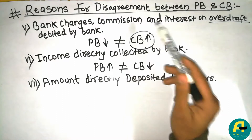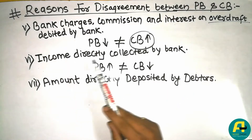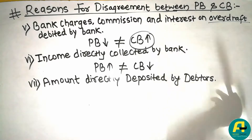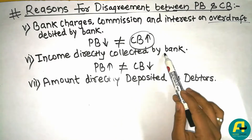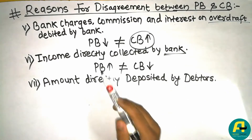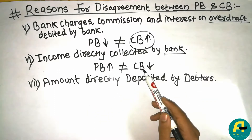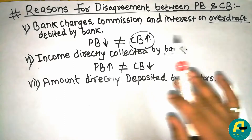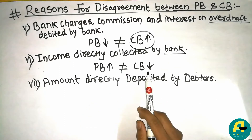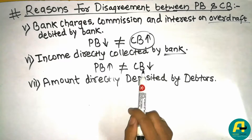Another reason is income directly collected by bank. For example, if you are working in an organization, your employer may deposit your income directly into your bank account. In that condition your pass book balance increases, but your cash book balance remains as it is — so there is a difference between the pass book and cash book balance.